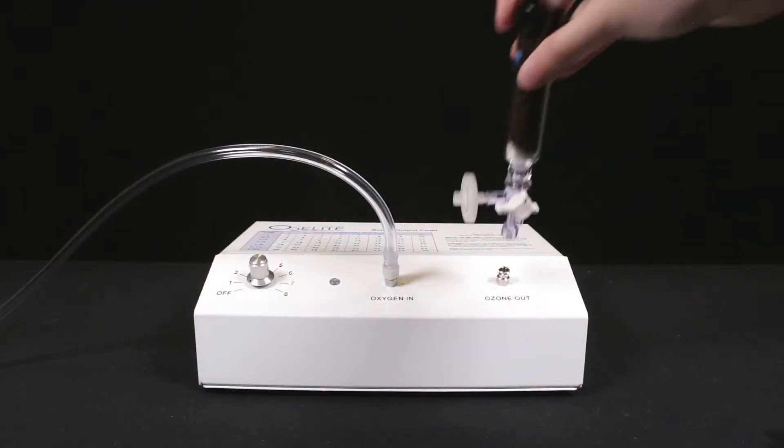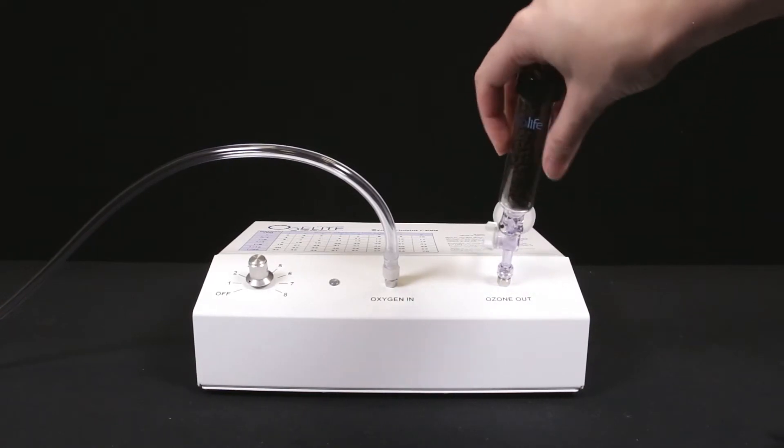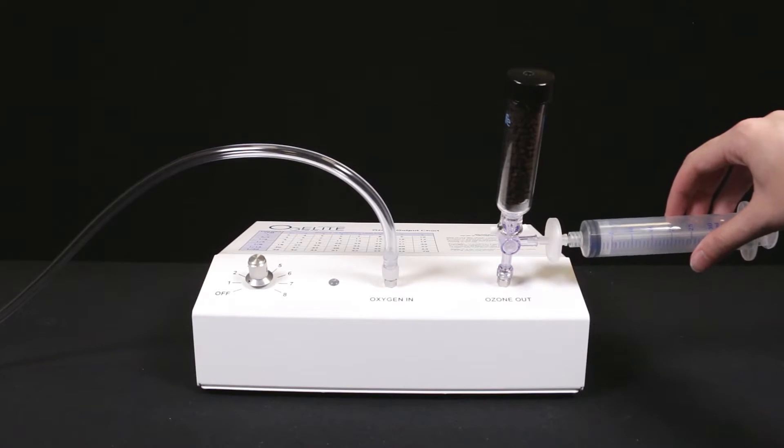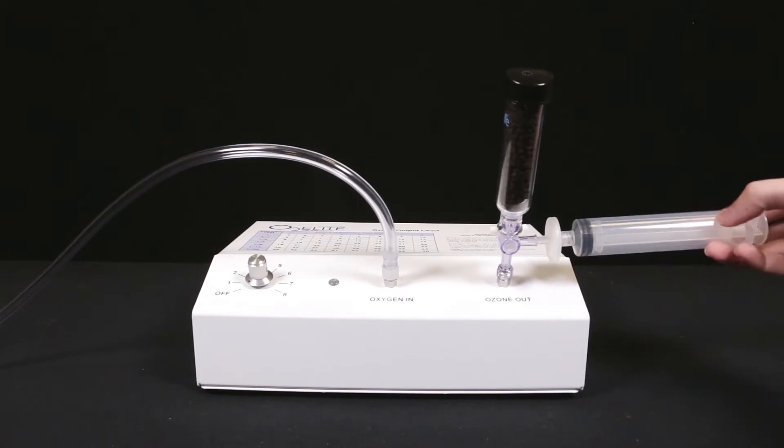Next, you will attach the system to the ozone outport of your ozone generator. Once you have the system connected, take a syringe of your choice and attach it to the micron filter connected to the ozone syringe filling system. Then you can turn on your ozone, turn the off-valve toward the filtration system, and then fill your syringe.